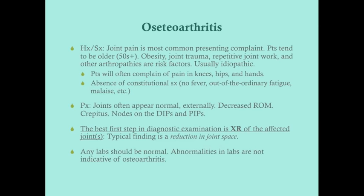On physical exam, joints tend to appear normal in early osteoarthritis. In progressive disease, however, patients may develop nodes on the distal and proximal interphalangeal joints. Joints with osteoarthritis tend to have decreased range of motion — both passive and active. Another hallmark finding, particularly in the knee and finger joints, is crepitus: when passively flexing or extending the joint, you feel a resistance similar to Rice Krispies — a bubbly, grinding sensation. This represents bone-on-bone contact and is indicative of osteoarthritis.